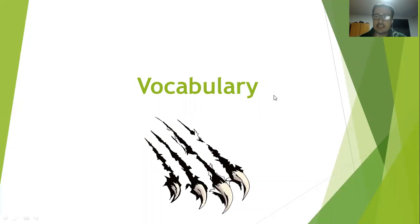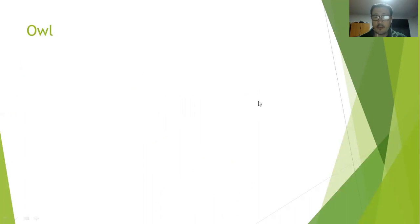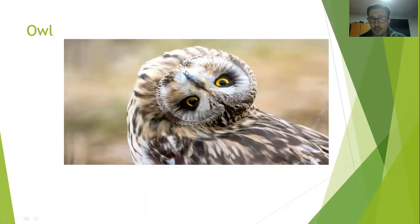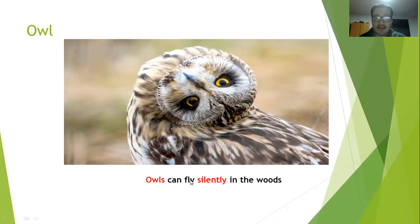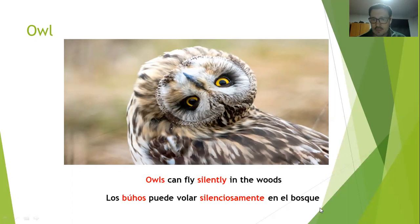Let's see the vocabulary. Number one is owl. Owl in Spanish means búho. The example is: owls can fly silently in the woods. Los búhos pueden volar silenciosamente en el bosque. We are looking at animals and adverbs of manner: owl/búho, silently/silenciosamente.